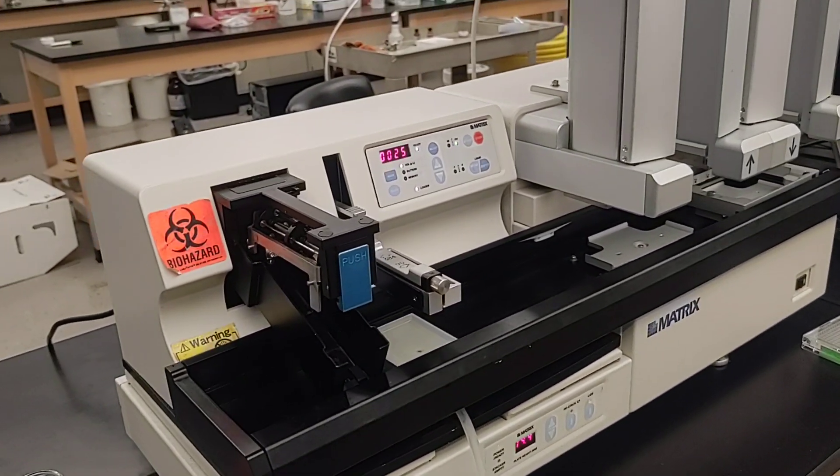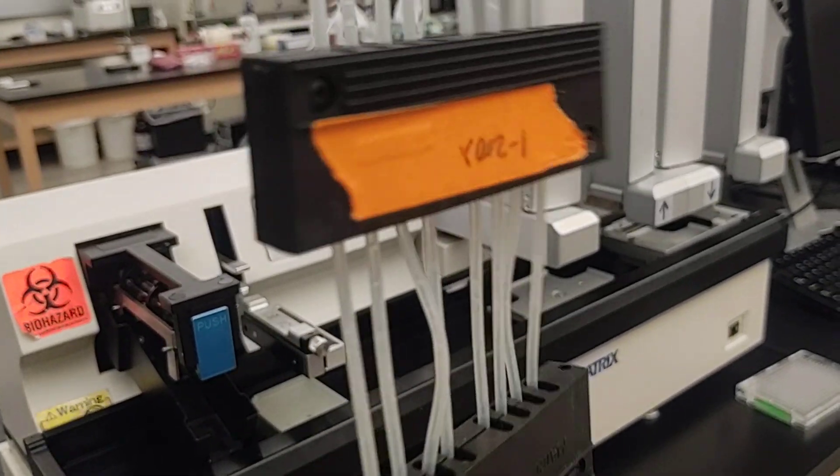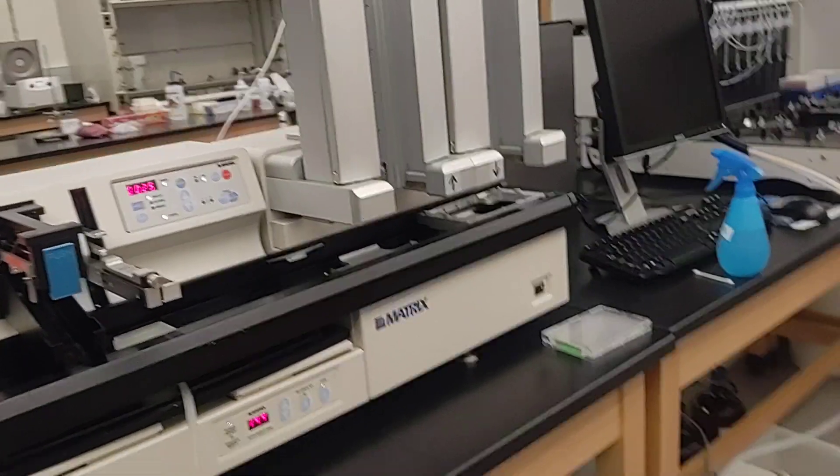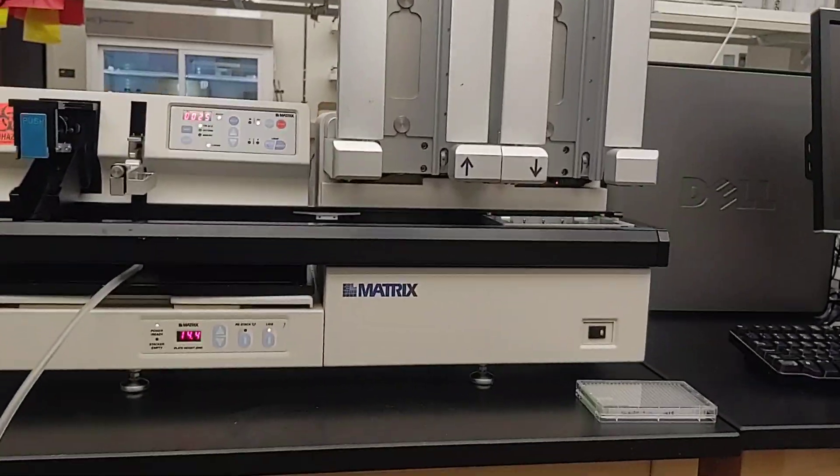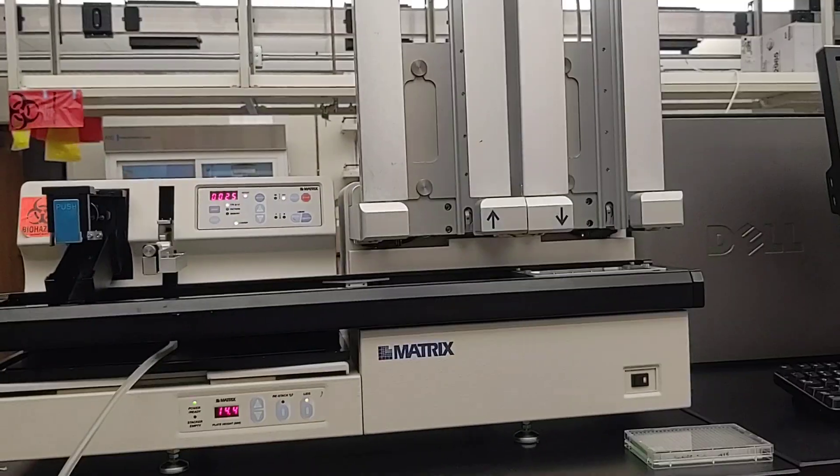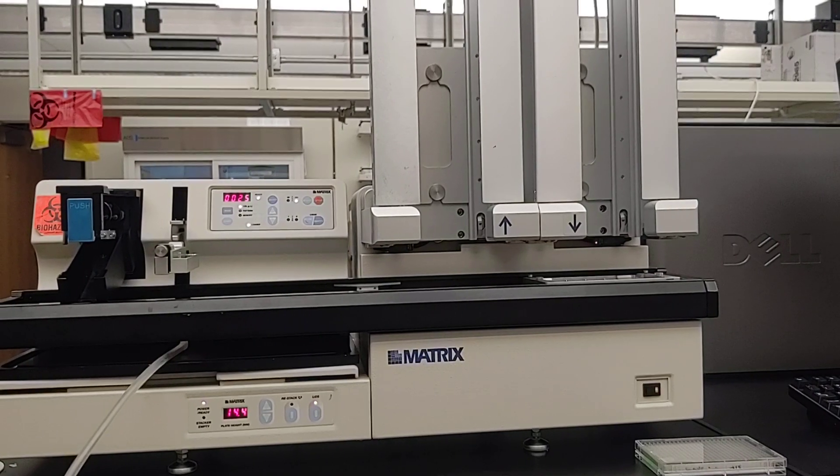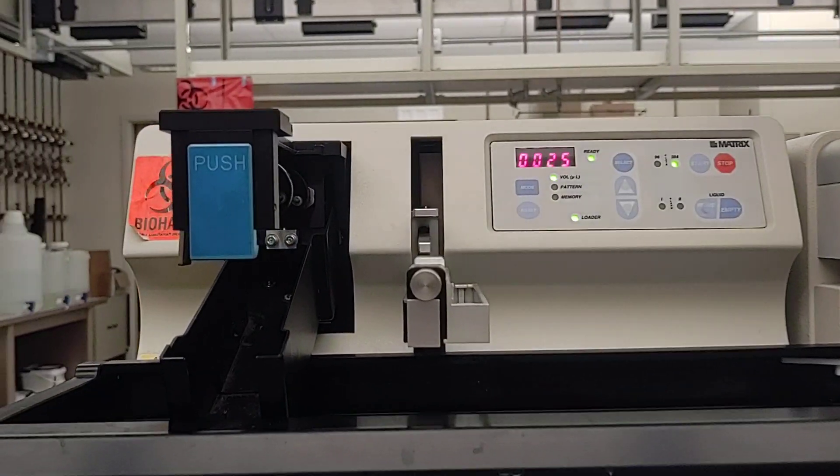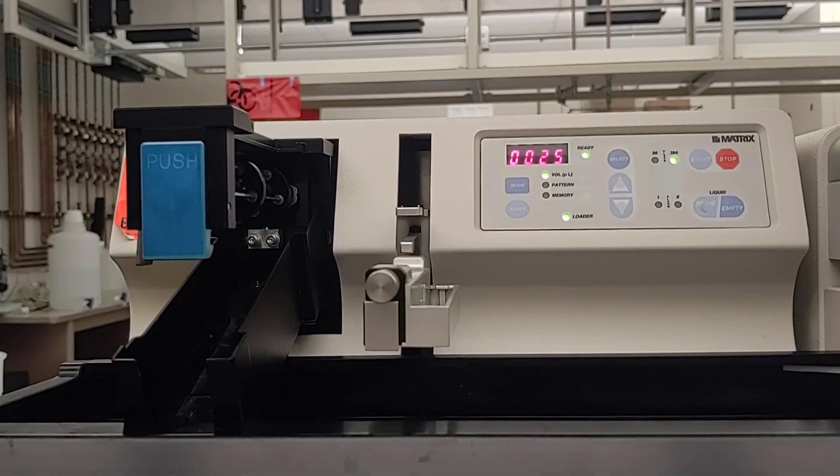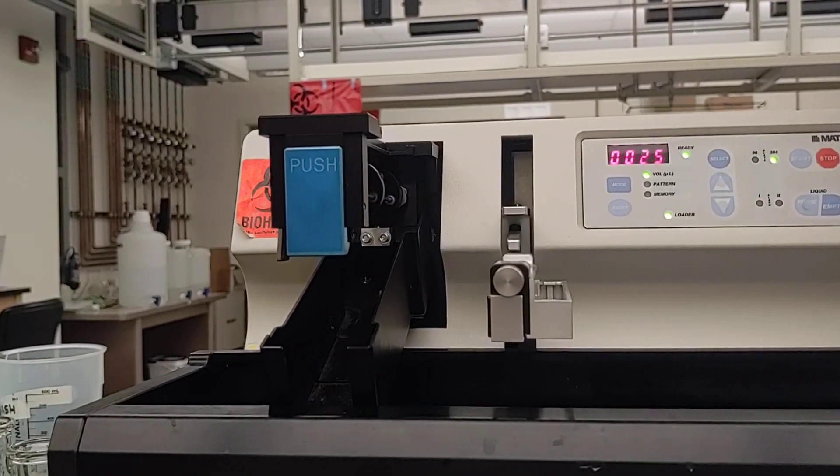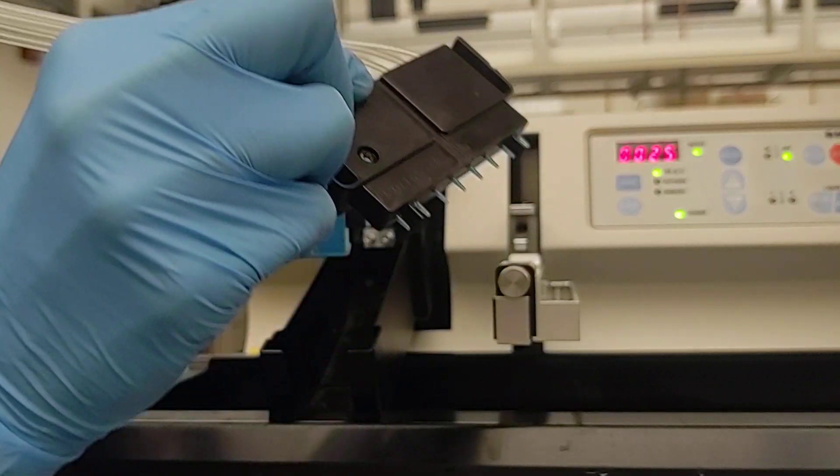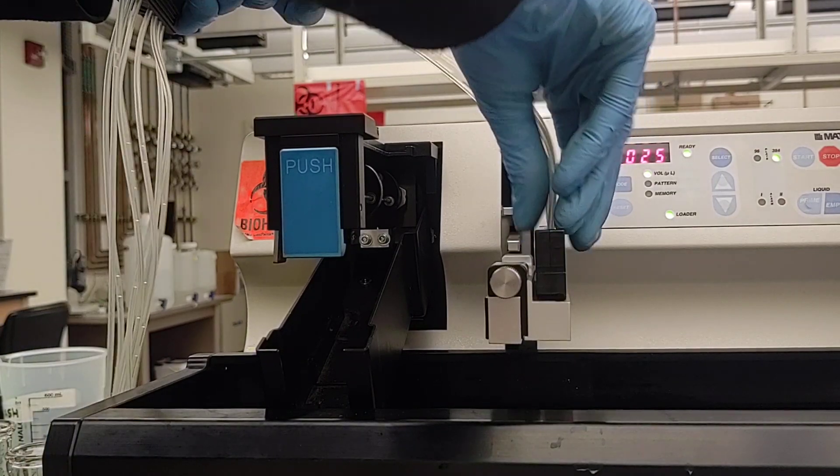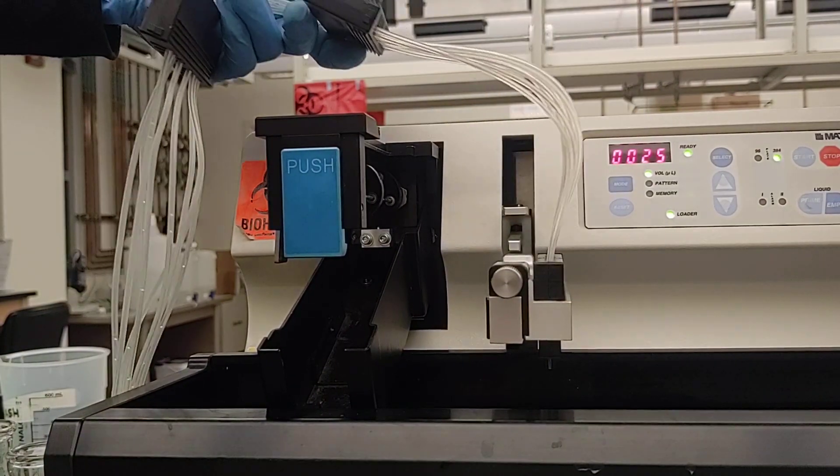And this is the cassette we're going to use for 1 to 200 microliters. So to load the cassette, you start by putting the spout end into this holder there. And it just clips into place.